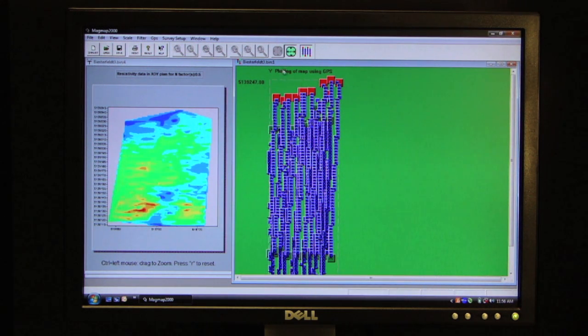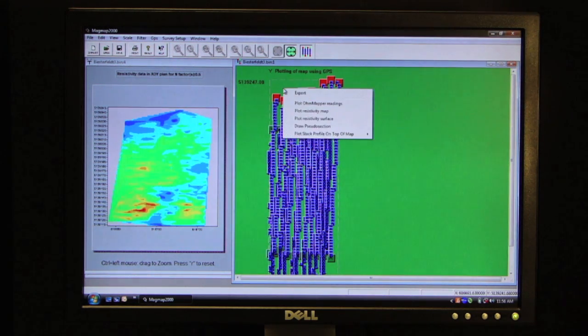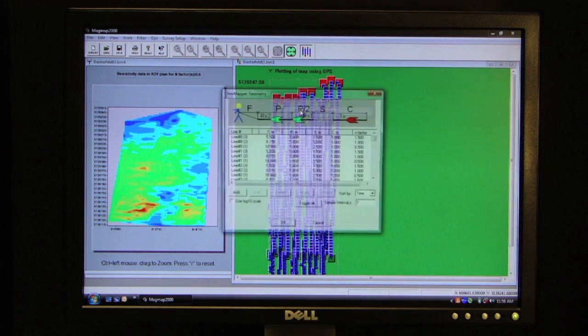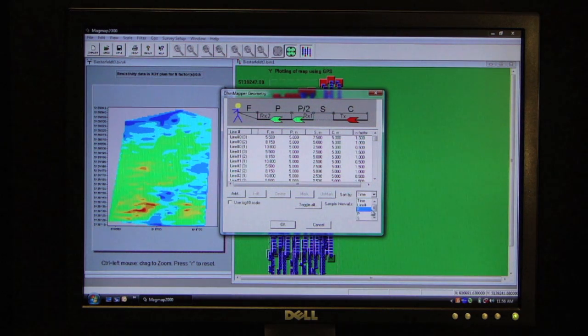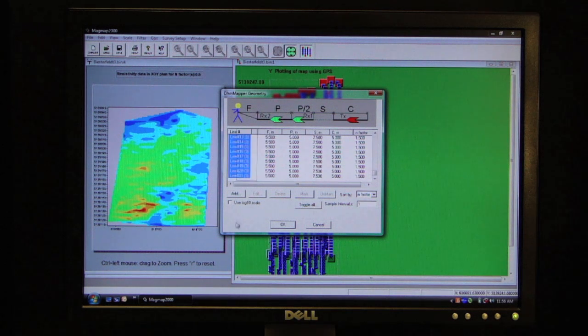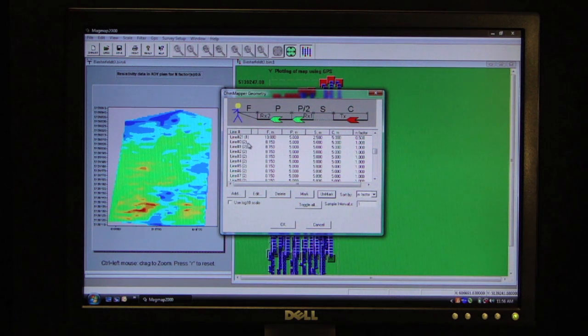If we want to look at another depth, this is the top one meter, let's say we want to go down to the two meter readings, we can simply plot another resistivity map, again sort that map to depth, and select the second receiver, receiver two, and again pick up all 21 of those lines.